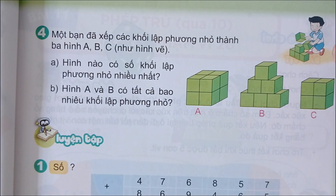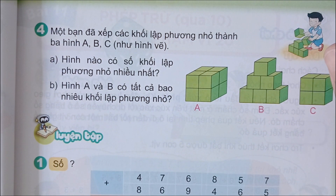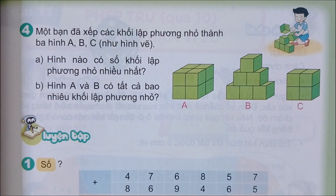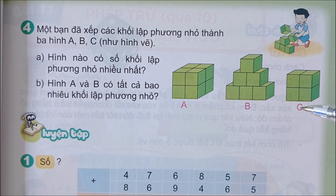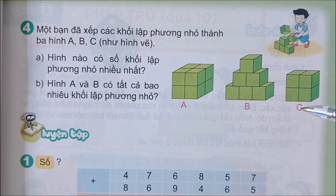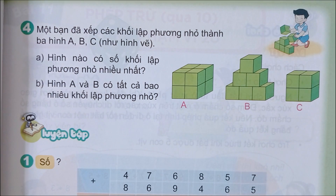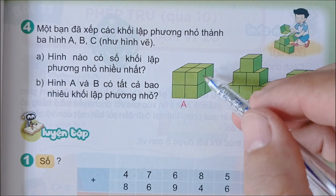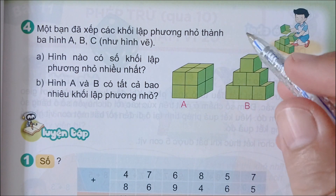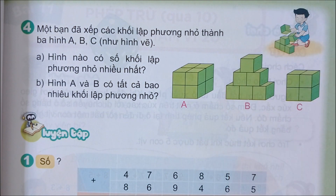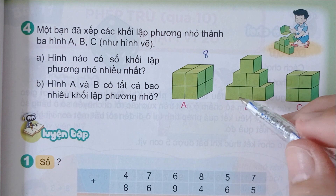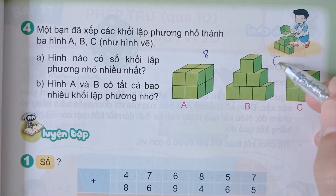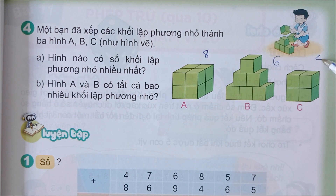Bài tiếp theo: Một bạn đã xếp các khối lập phương nhỏ thành 3 hình A, B, C như hình vẽ. Hình A có số khối lập phương nhỏ nhiều nhất. Hình A có 1, 2, 3, 4, 5, 6, 7, 8 khối. Hình B có 1, 2, 3, 4, 5, 6 khối. Hình C có 4 khối.